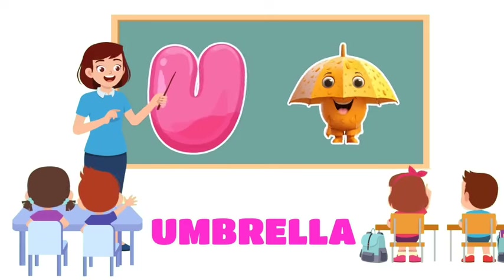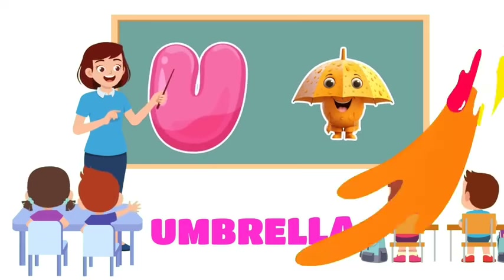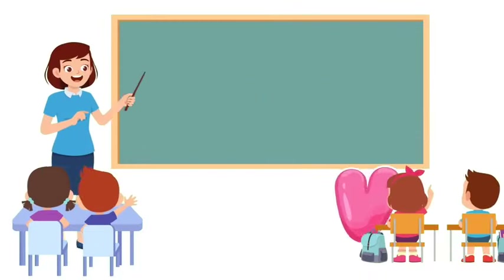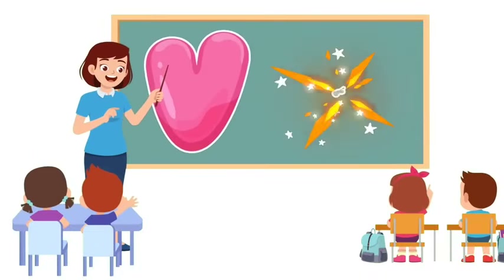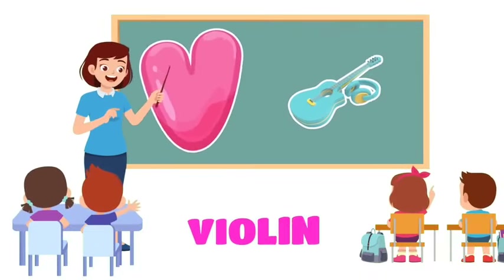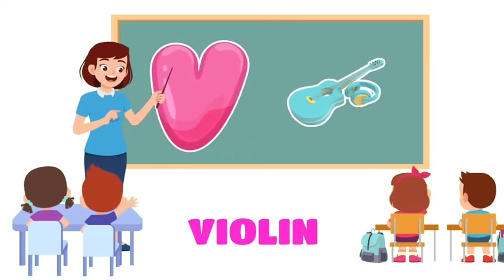U is for Umbrella. U, umbrella. U, umbrella. V is for Violin. V, v, violin. V, v, violin.